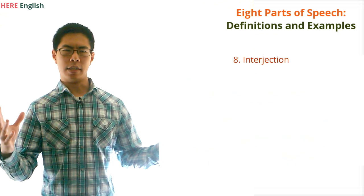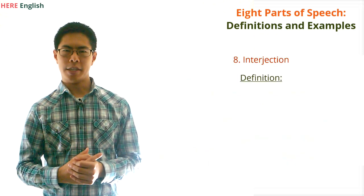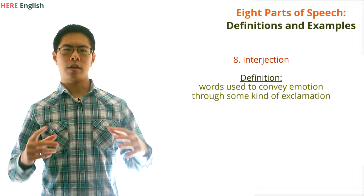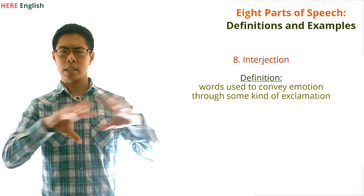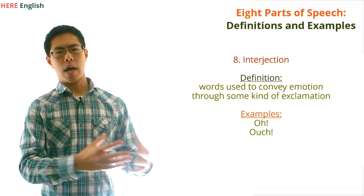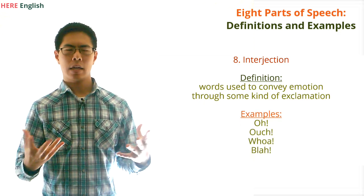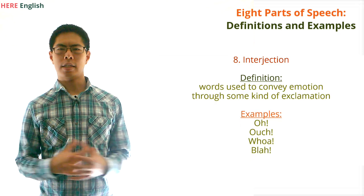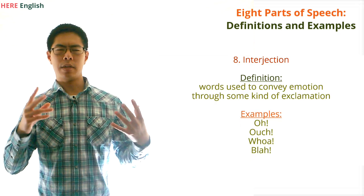Finally, we have interjections. What are interjections? Interjections are words used to convey emotion through some kind of exclamation. Some examples of interjections are oh, ouch, whoa, and blah. You can just insert these words anywhere in a sentence, and they'll convey some kind of abrupt emotion.